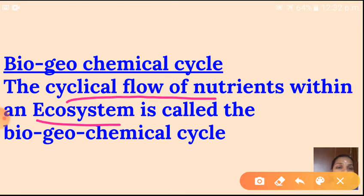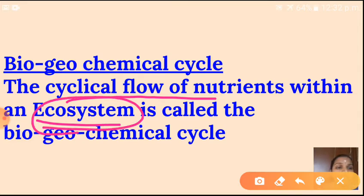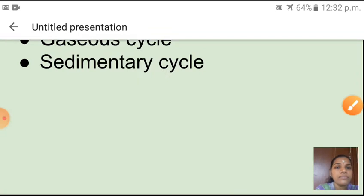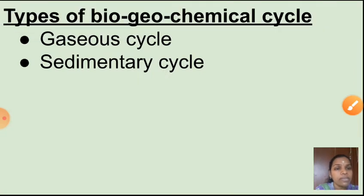You know what an ecosystem means — biotic and abiotic organisms, that is living and non-living organisms, interconnected. The interaction between living things and non-living things is called the ecosystem. The cyclical flow of nutrients within an ecosystem is called the biogeochemical cycle. There are two types: first is the gaseous cycle and next is the sedimentary cycle.